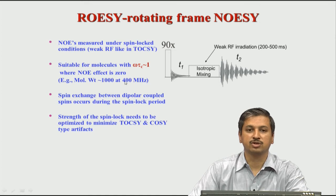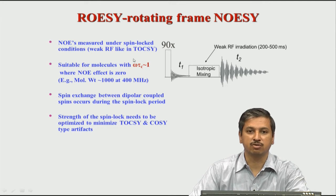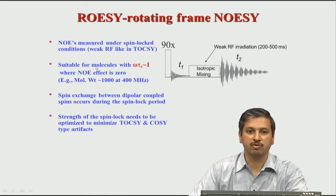So one should now look at either changing the magnetic field — for example, going to 600 MHz — or changing the temperature, since temperature affects tau_c, or looking at a different molecular weight range. This is why ROESY is important — it overcomes all of these problems, and you do not have to worry about NOESY; you can directly record a ROESY spectrum.